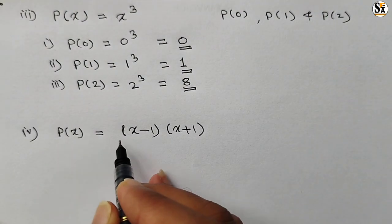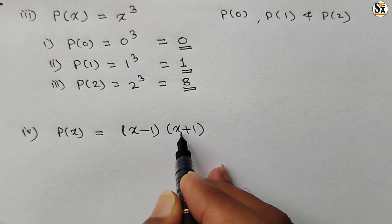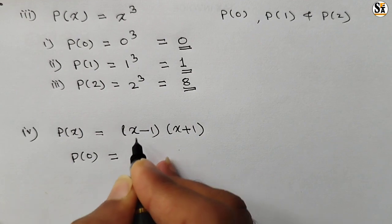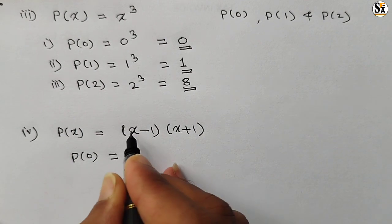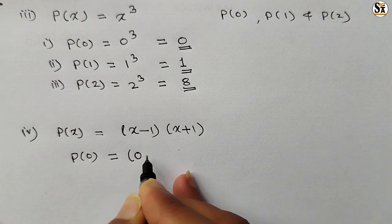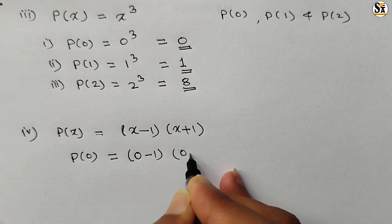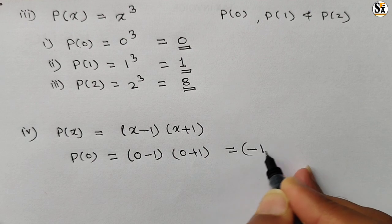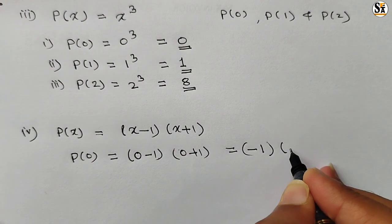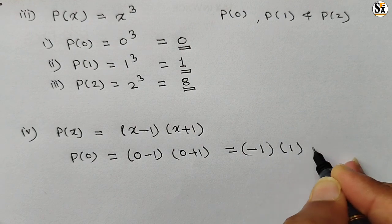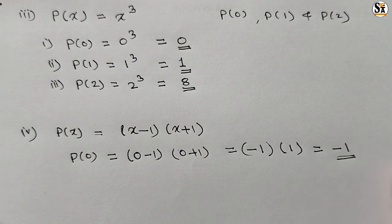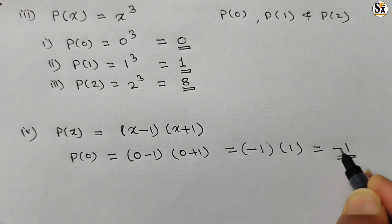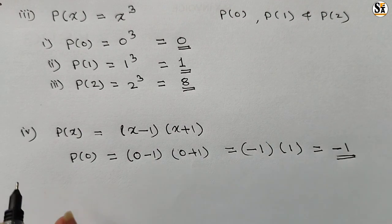Now see the fourth polynomial: p(x) = (x minus 1)(x plus 1). For p(0): put x equal to 0, so (0 minus 1)(0 plus 1) equals (−1)(1) equals minus 1. Always remember: if we multiply a positive number with a negative number, we get a negative answer. So minus 1 is our answer.